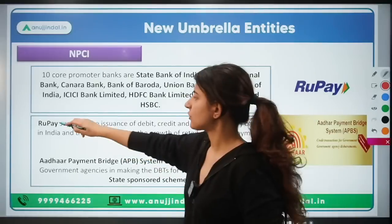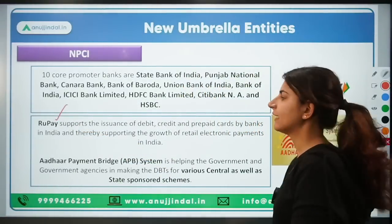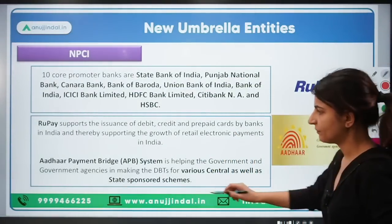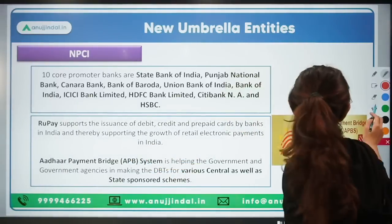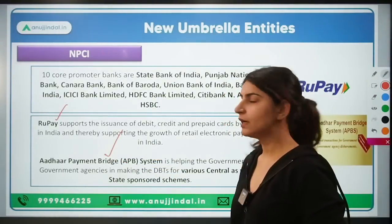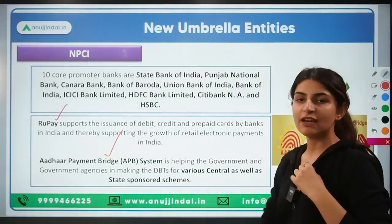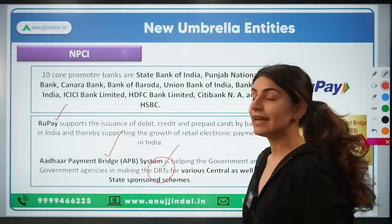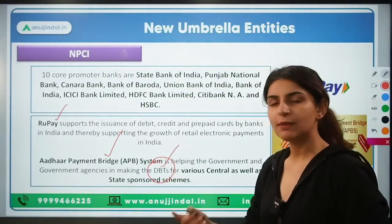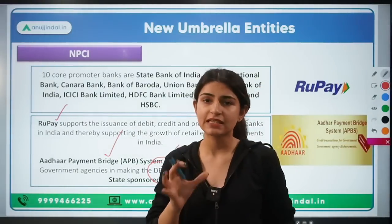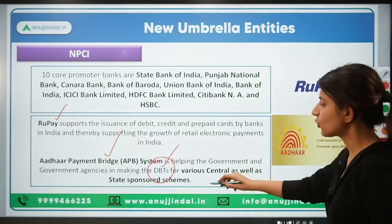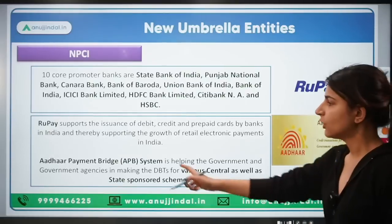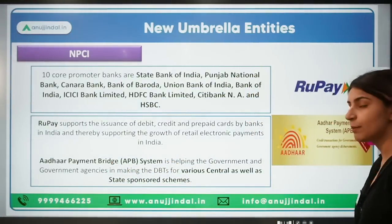RuPay supports both offline and online transactions, especially low-value transactions, through debit, credit, and prepaid cards. Another product of NPCI is the Aadhaar Payment Bridge System, through which the government can make direct benefit transfers to all beneficiaries of various state and central government schemes.